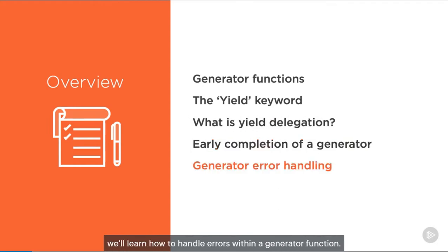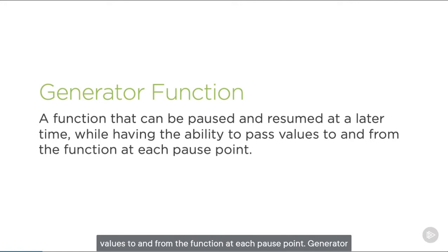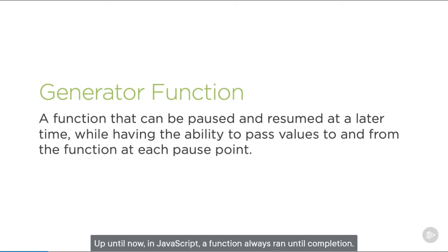Finally, we'll learn how to handle errors within a generator function. The definition of a generator function is a function that can be paused and resumed at a later time, while having the ability to pass values to and from the function at each pause point. Generator functions can run to completion, but they don't have to. Up until now in JavaScript, a function always ran until completion.